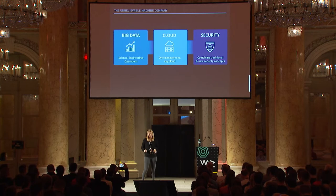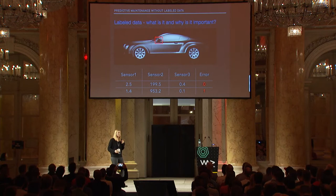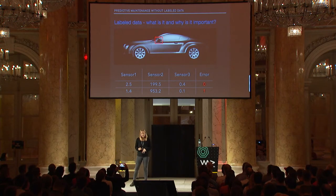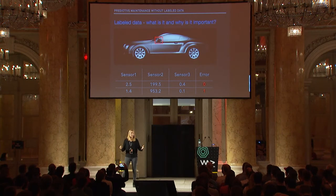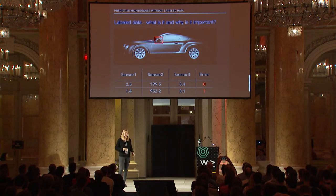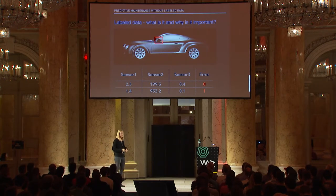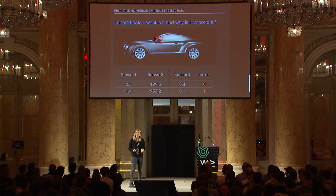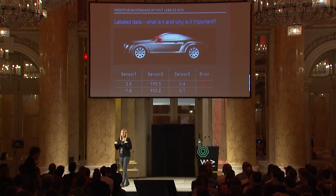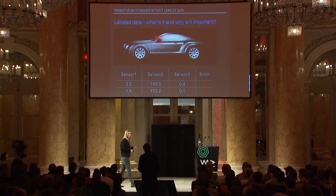I want to explain what labeled data is — a lot of people probably already know, I just want to make sure we're all on the same page. You can label data in images: say you have a hundred thousand images of cars and you want to detect what a car mirror looks like. Someone or something has to draw a bounding box around the object of interest — in this case the mirror.